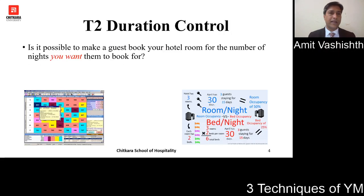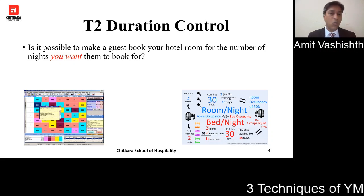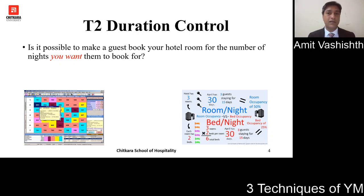Technique number two is duration control. The question is: is it possible to make a guest book your hotel room for the number of nights you want them to book? And the answer is a big yes. Hotels have systems in place whereby they create packages and make their rates comparatively very attractive for guests. For example, if I am a guest traveling for business and want a room for just one night, when I call the hotel, the reservation agent gives me two options.